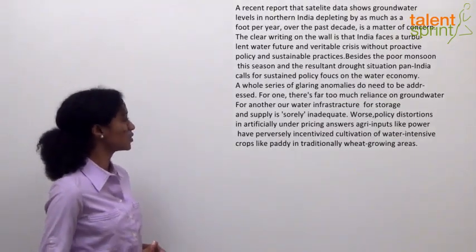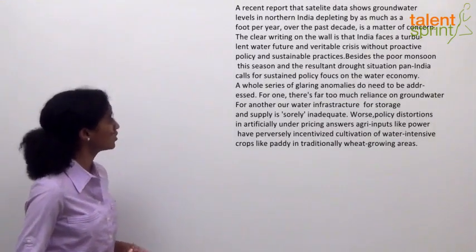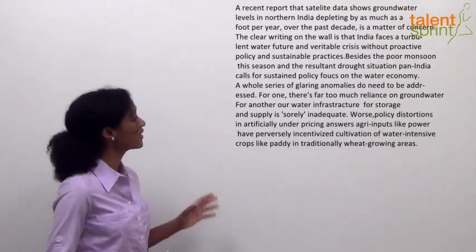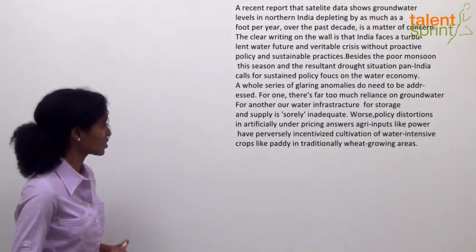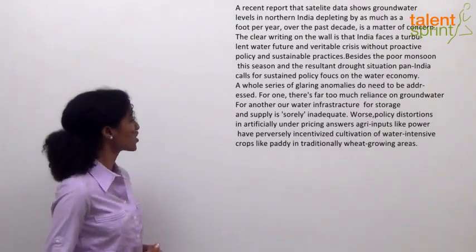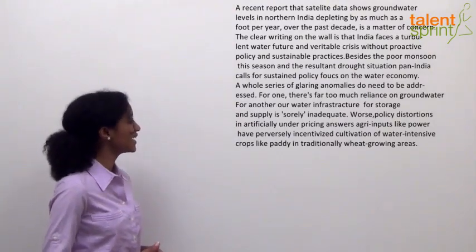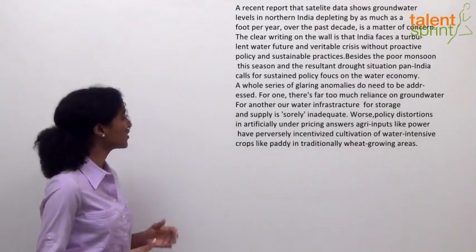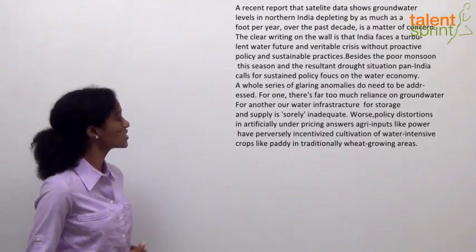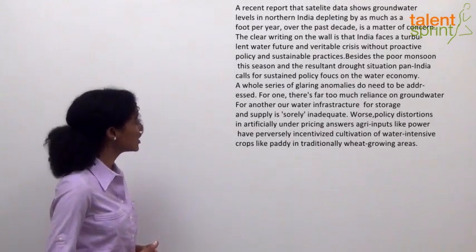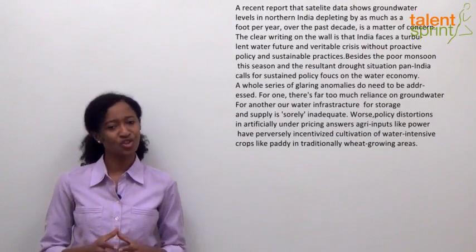Besides the poor monsoon this season and the resultant drought situation, pan-India calls for sustained policy focus on the water economy. A whole series of glaring anomalies do need to be addressed. There is far too much reliance on groundwater, and our water infrastructure for storage and supply is sorely inadequate. Policy distortions in artificially underpricing agri-inputs like power have perversely incentivized cultivation of water-intensive crops like paddy in traditionally wheat-growing areas.